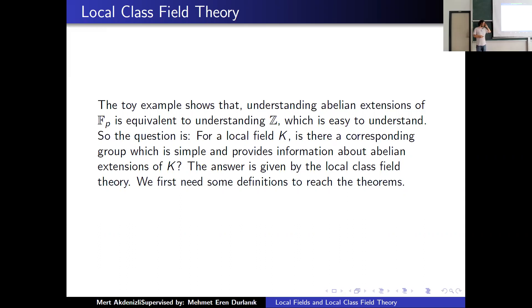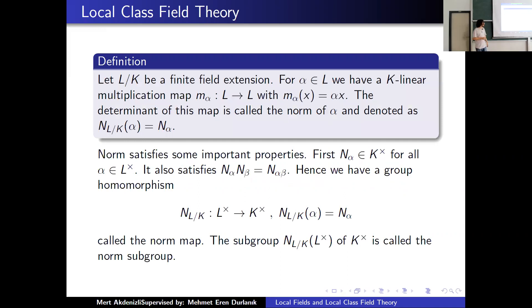Our question is: for a local field K, is there a corresponding group which is simple enough that we can extract information about its abelian extensions? We first define the multiplication-by-alpha map, and the determinant of this map is called the norm of alpha, denoted N(alpha). This norm satisfies good properties: N(alpha) is in K* for all alpha in L*, and it satisfies the multiplicative property. So we have a group homomorphism from L* to K* called the norm map, and the image — a subgroup of K* — is called the norm subgroup.